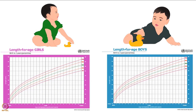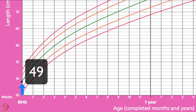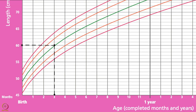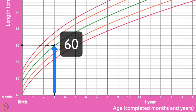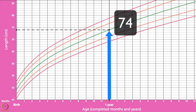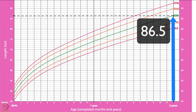Let's discuss the average length of a child from birth to 2 years, along the 50th percentile line. The average birth length of a girl is 49 centimetres. At 1 month it is 54 cm, at 3 months 60 cm, at 6 months 66 cm, at 1 year 74 cm, and at 2 years the average length of a girl is 86.5 centimetres.